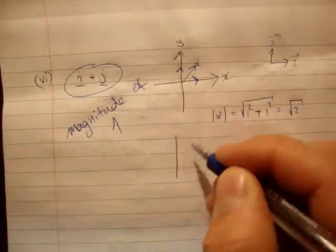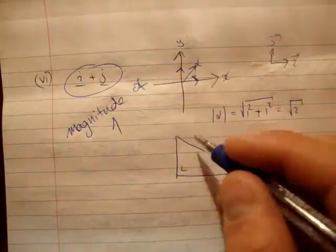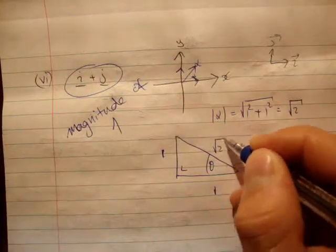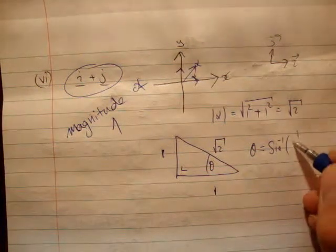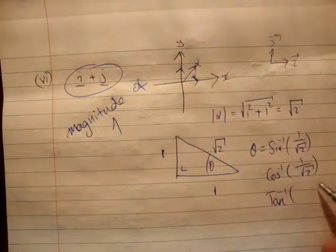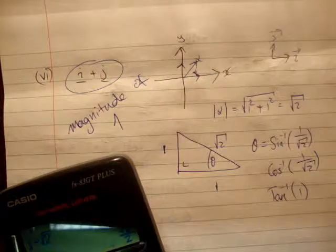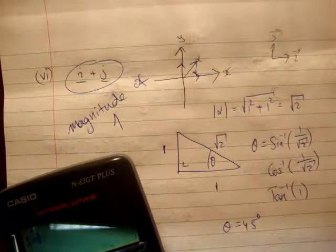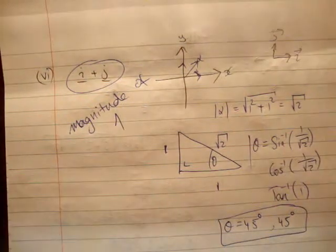Let's get the angle. I'll draw our triangle quickly. Theta is equal to inverse sine of 1 over root 2, or inverse cosine of 1 over root 2, or inverse tangent of 1. Let's see what we get: 1 divided by root 2, then inverse sine of that — theta equals 45 degrees. And inverse cosine of 1 over root 2 also gives 45 degrees. You know you're correct when you get the same answer both ways. That was pretty simple.